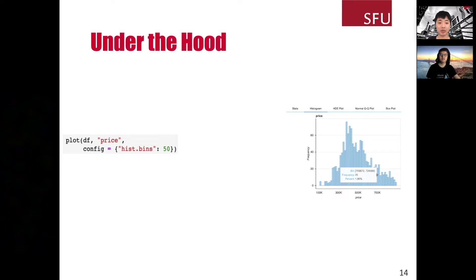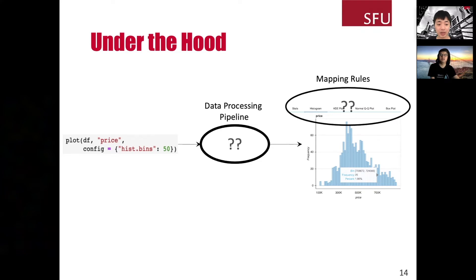Next, I'm going to introduce how dataprep.eda performs these tasks I demonstrated just now. The first thing we need to consider is that, given the code on the left-hand side, what plot are we going to put into the visualization on the right-hand side? In dataprep.eda, we define a bunch of mapping rules for each function to decide what visualizations to show. I will cover this in the next slide. Another thing we need to consider is that, given a set of visualizations we'd like to generate, how are we going to compute the data that is required for these visualizations? One of the challenges is that, because we need to compute data for multiple visualizations, doing it naively will make redundant computations and cannot make full use of the multiple cores in the CPU. In dataprep.eda, we have a data processing pipeline to solve this issue.